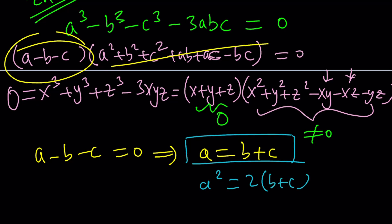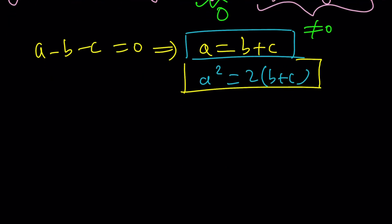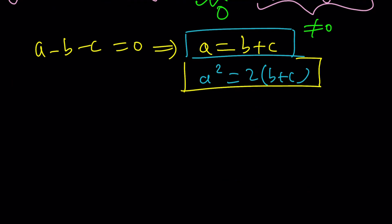Now, these two together actually make up a really nice system because you can do something like this, right? We can basically use substitution, can't we? Since a is equal to b plus c, why don't we go ahead and square both sides and we're going to get b plus c quantity squared, which is b squared plus c squared plus 2bc, which is equal to 2b plus 2c. Wait a minute. Is this going to help? It's kind of confusing.